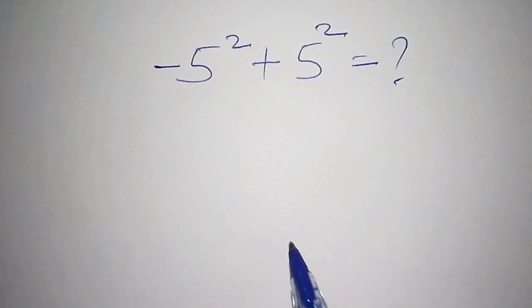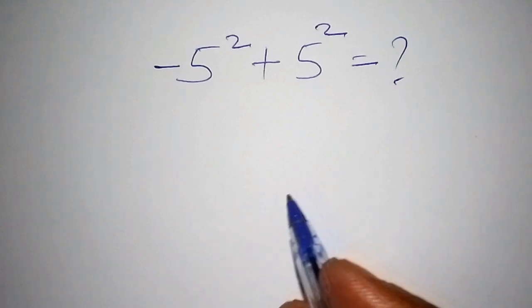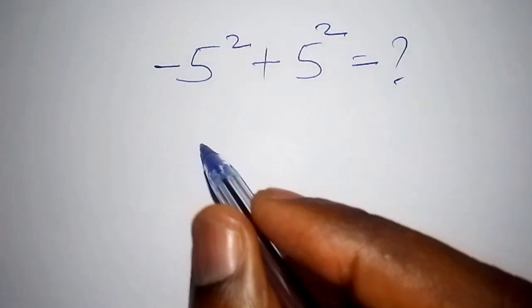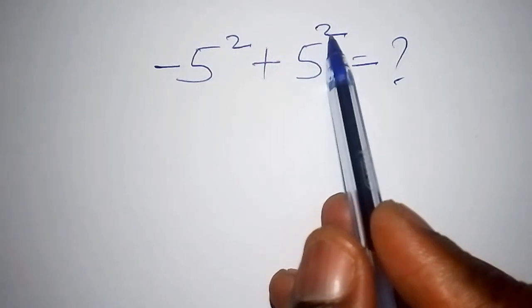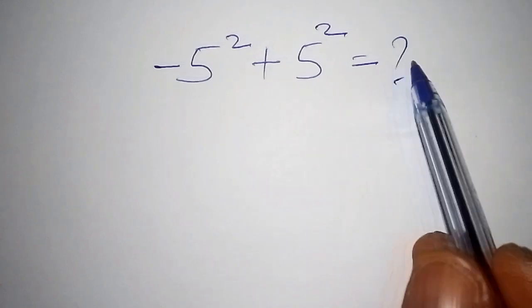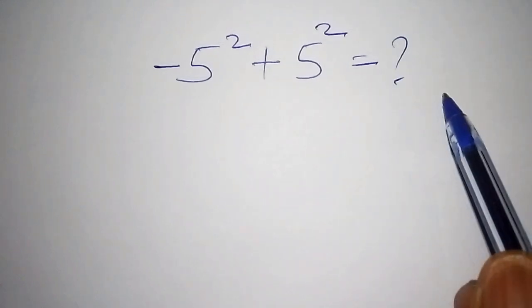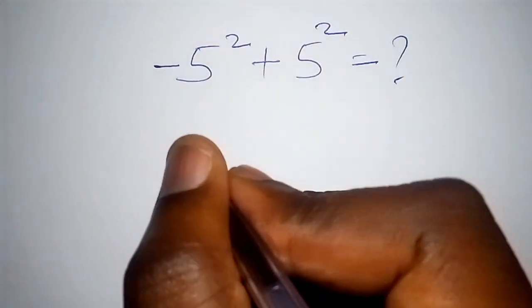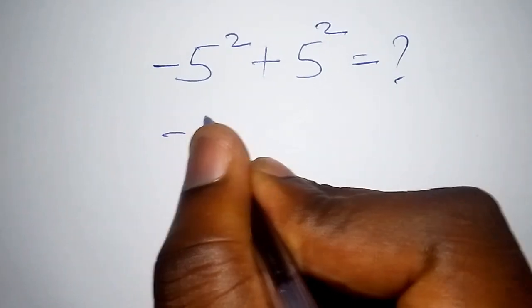The first thing that most people make a mistake, those who are not strong in basic maths, they shall say that since we have the powers, the powers shall all cancel each other and the answer shall be zero, which is not true.